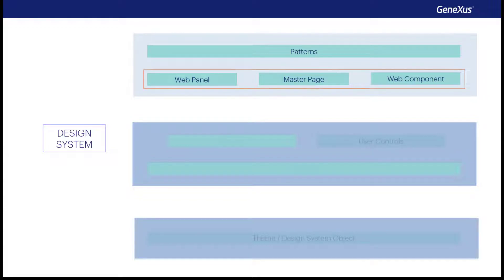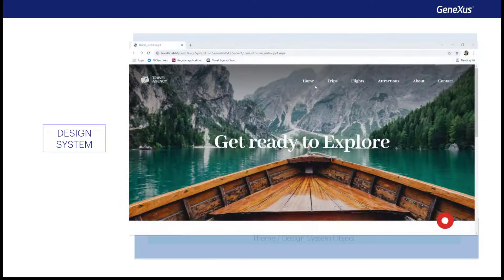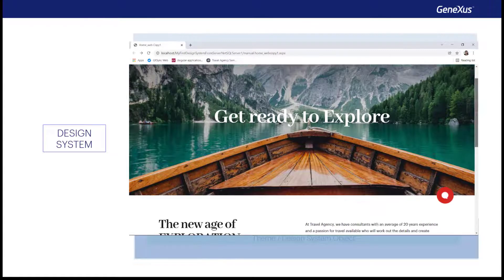In short, first we talked about the patterns that use web panels, master page, and web components to implement parts of the application. We've seen these objects as ways to componentize the programs for maximum reuse, and that they're objects with a layout and behavior. Now we're getting close to the heart of the matter. In any of these objects, we have a layout to be designed. Besides being able to use third-party controls that already come with design — user controls — in that layout, we can use stencils to compose controls.